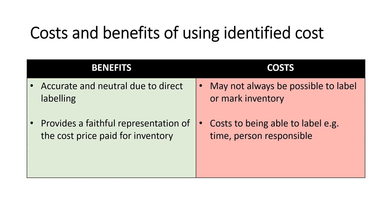However, there are some large disadvantages. It may not always be possible to label or mark inventory — for a large business like a supermarket with millions of items of stock, it would be way too expensive and time-consuming to use identified cost. That's where they might choose to use a different method, such as FIFO, which will be explored later. You should now have a basic understanding of identified cost and how to record this in your inventory cards and general journal.